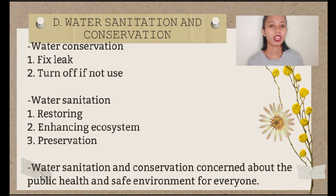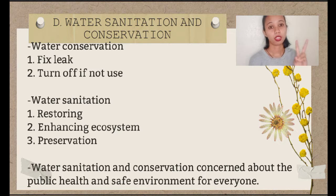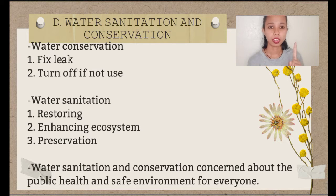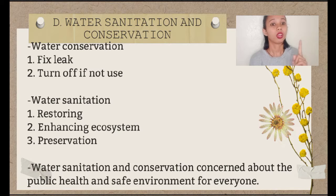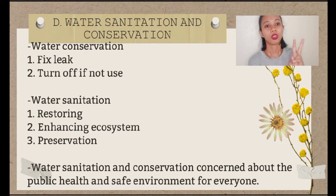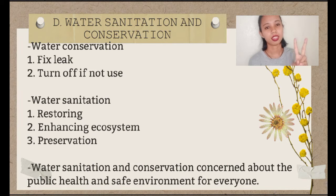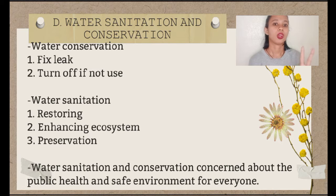Water conservation. There are two most important and basic rules when it comes to water conservation. First, fix — meaning fix the water leak to avoid waste. Fix your habit like overuse of water even when it's not really necessary. That is the two most important and basic rules when it comes to water conservation.